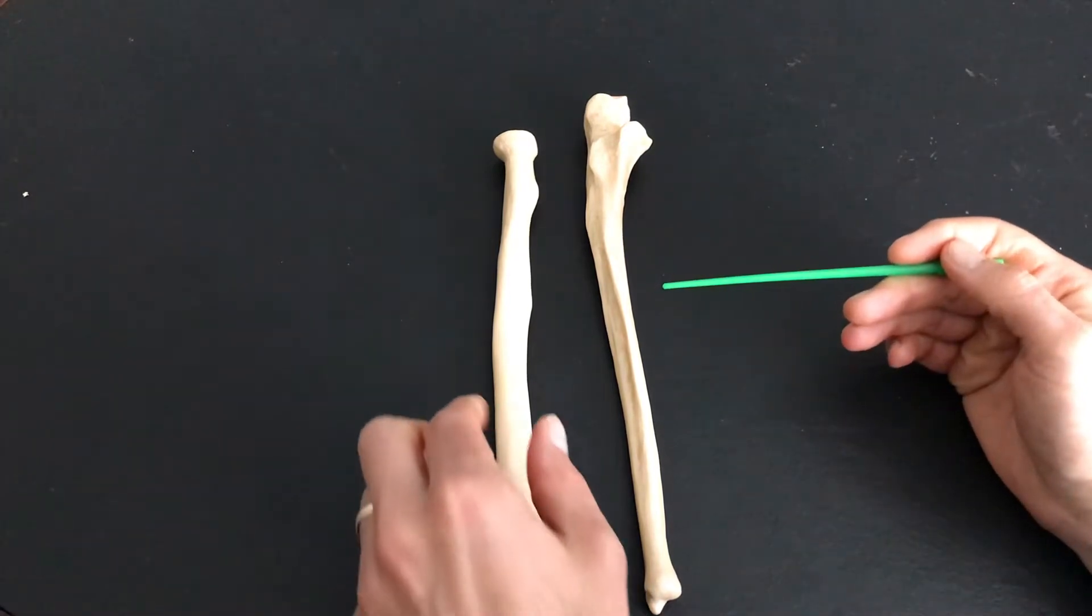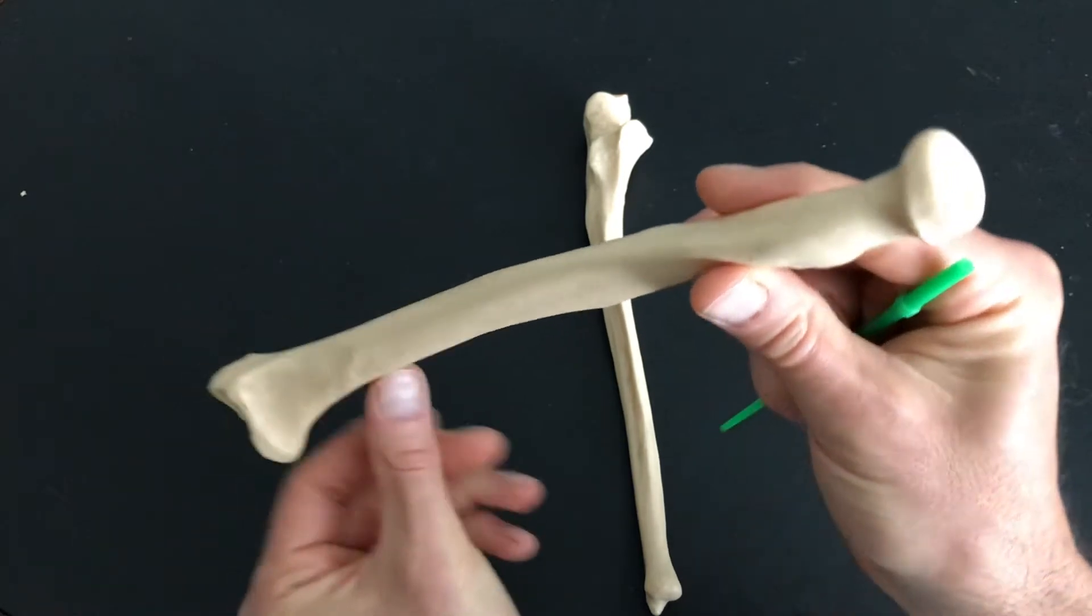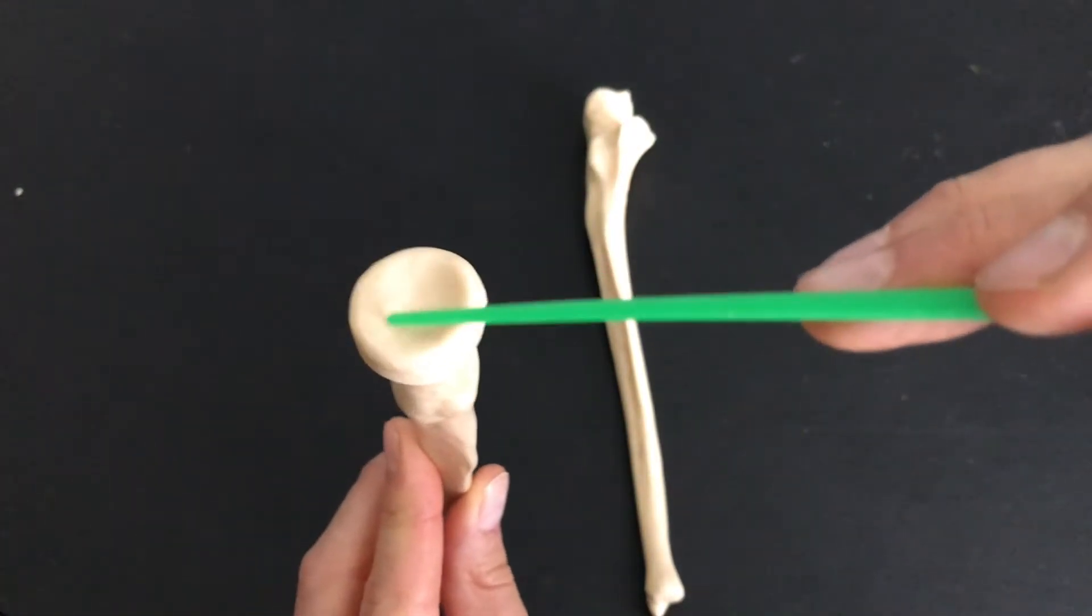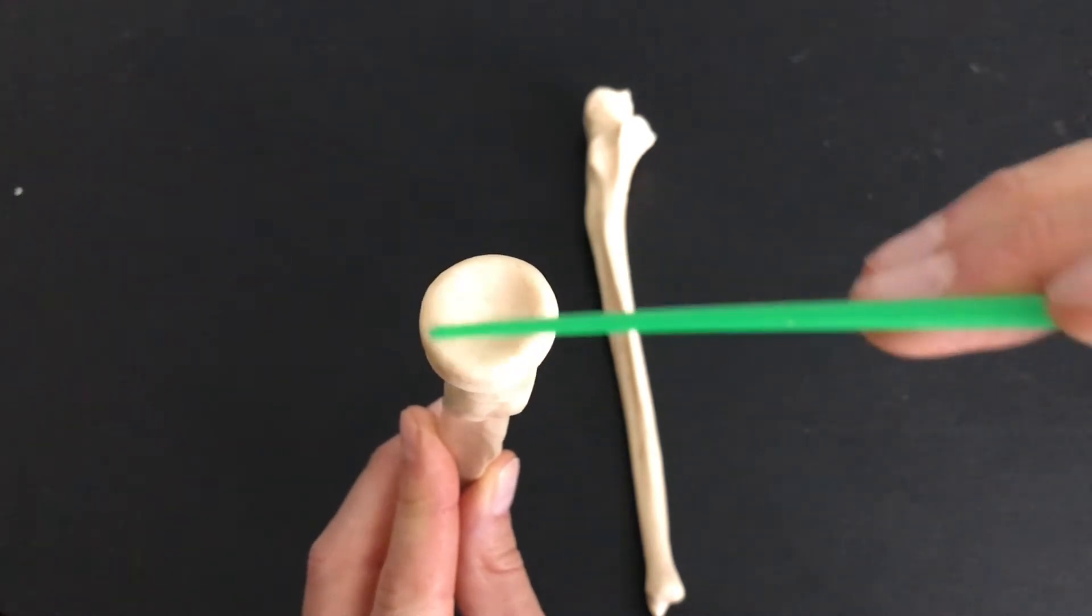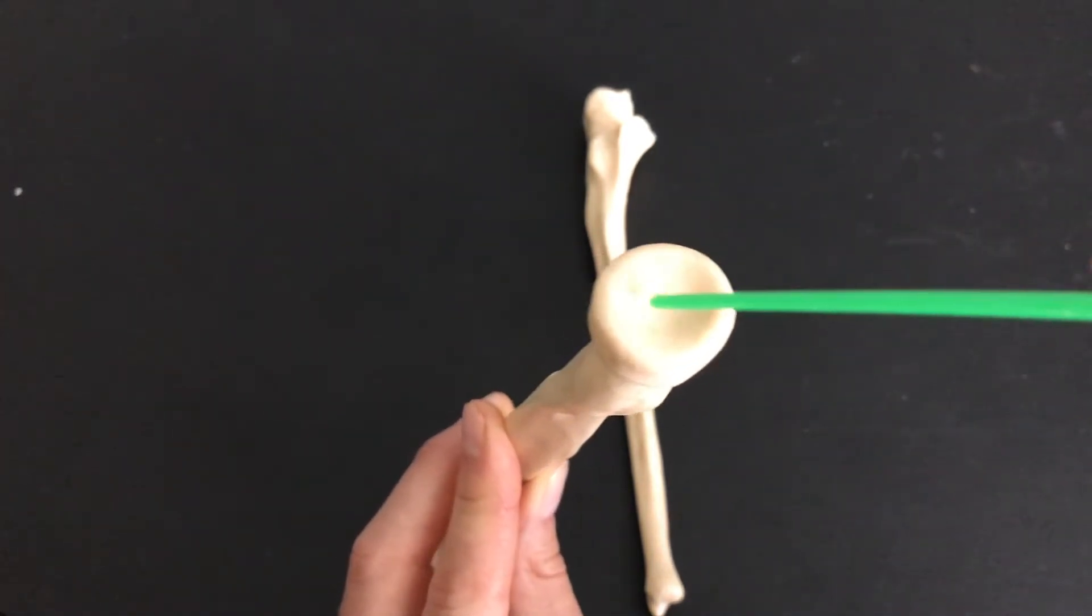So first, let's talk about why we call this the radius. Do you see this nice perfect circle if I show you the proximal end? This is the end that's closer to your elbow.